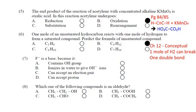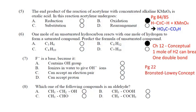Question number 7: F⁻ is a base because it — (a) contains hydroxyl group, (b) arises in water, (c) can accept an electron pair, یا (d) can accept proton۔ یہ simple ہے — Brønsted-Lowry concept کے تحت base وہ ہوتا ہے جو proton accept کرے، تو answer: can accept proton۔